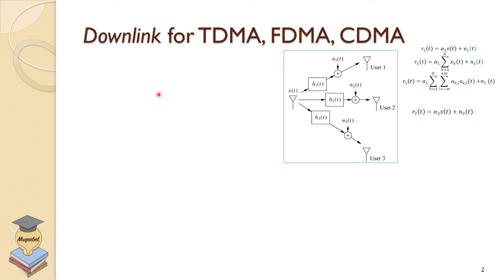Let's do the analysis for the downlink for TDMA, FDMA and CDMA. The diagram shows here the downlink where we have the transmitter, the base station and the different users. So basically at the transmitter side we're going to send signals for user 1, signal for user 2, signal for user 3.